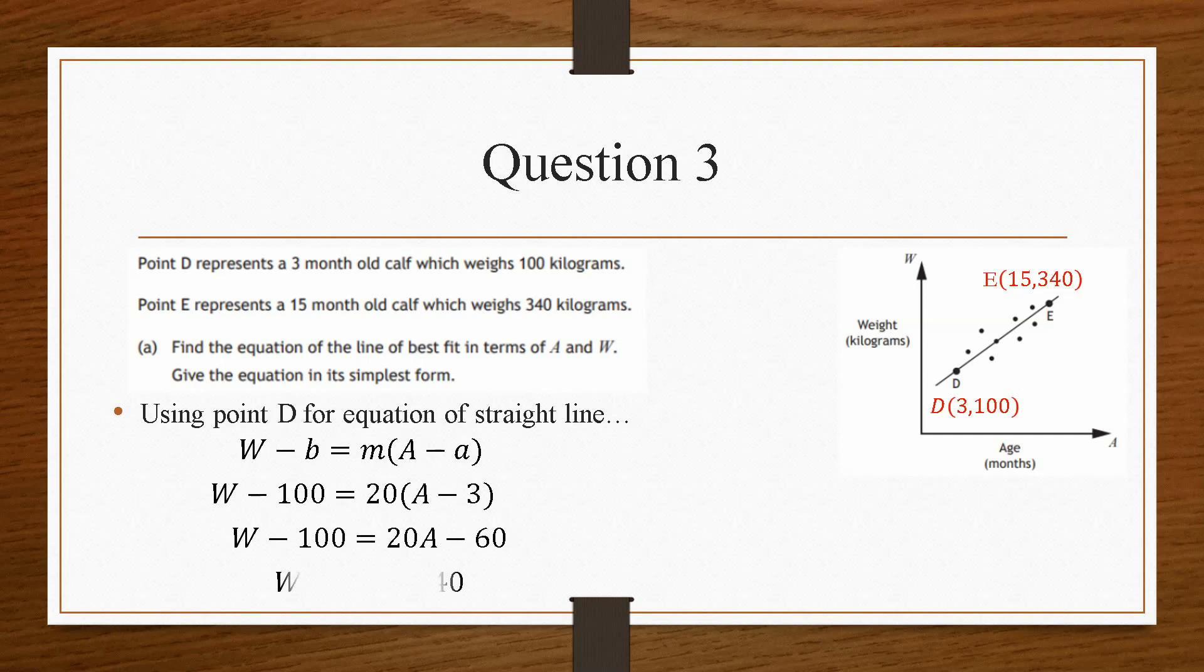So when we substitute the numbers in, B is 100 and A is 3. And when we go through the process, we end up with this equation here, which is y equals 20A plus 40.